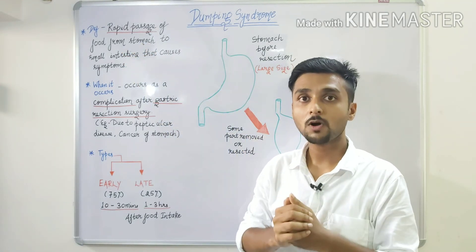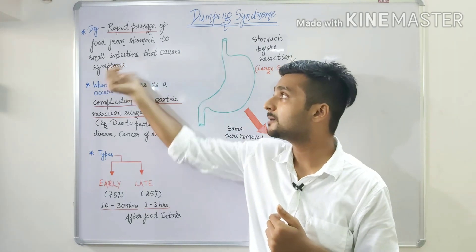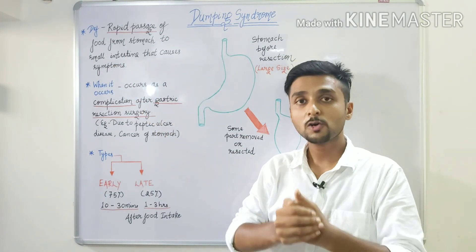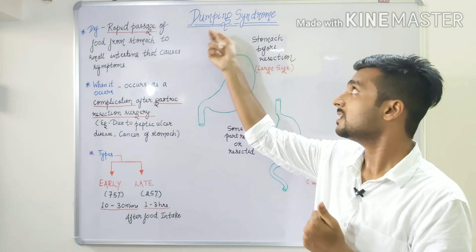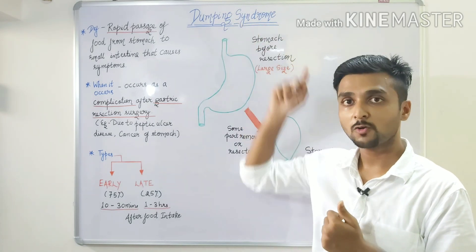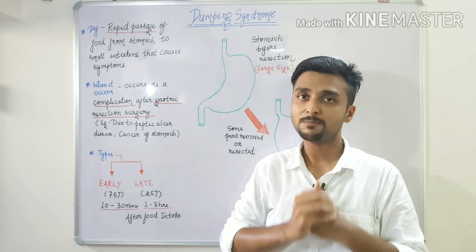But in the case of dumping syndrome, the definition states that rapid passage of food — very fast passing — occurs from the stomach to the small intestine, causing a group of signs and symptoms. Because syndrome means a group of signs and symptoms.